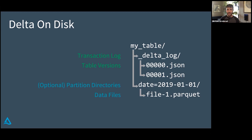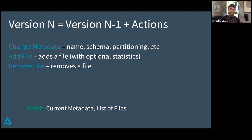Rather than having just one version of the table, we're actually going to have all of the Parquet files from multiple versions. This is a standard database trick called multi-version concurrency control, or MVCC. The transaction log records how the table changes over time. For any version, you can figure out what the current set of files are. In each of those JSON files, there can be different actions — those actions plus the table in the previous version create the new version.